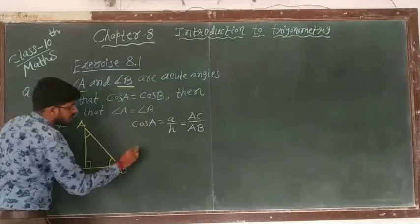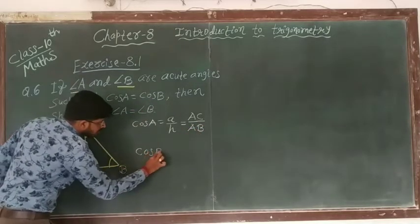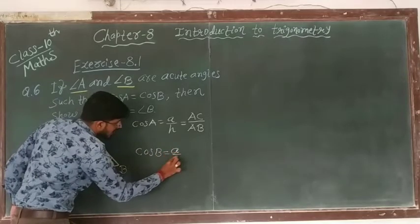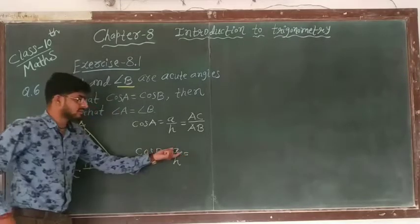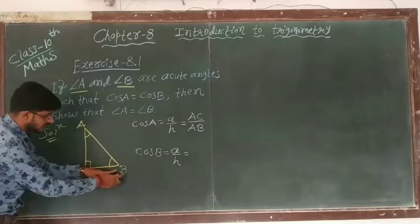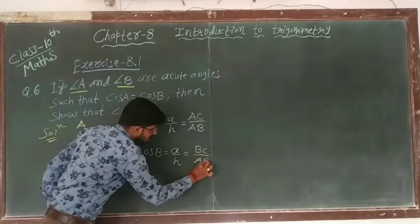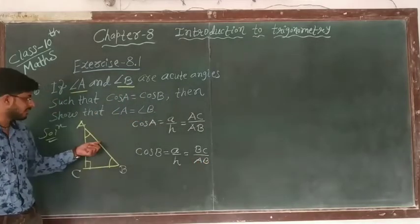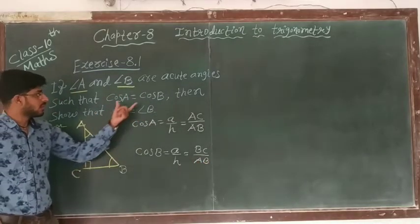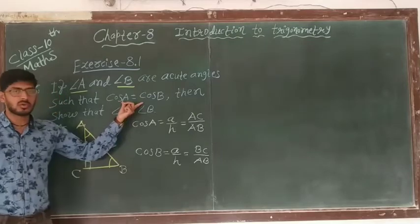Second thing, cos B. Cos B equal to same formula, adjacent upon hypotenuse, but adjacent side of angle B is BC upon AB because hypotenuse is the same. Now we can read that cos A equal to cos B.